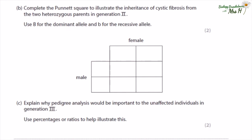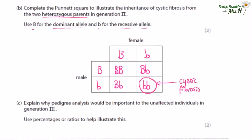Complete the Punnett square to illustrate the inheritance of cystic fibrosis from the two heterozygous parents in generation two. Use C for the dominant allele and c for the recessive. As these parents are Cc, put those gametes into the Punnett square, then complete the cross to show all possible offspring genotypes. The probability of having a child with cystic fibrosis is one in four each time. If the examiner hasn't asked you to identify the affected child, circle it and label it so the examiner knows you know which one is affected.